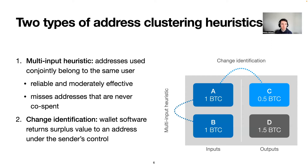Generally there are two types of address clustering heuristics that we can use. The first one is the multi-input heuristic. It has been around for a long time, where addresses that are used conjointly in a transaction belong to the same user. This technique is very reliable and moderately effective, but it misses addresses that are never co-spent with each other.